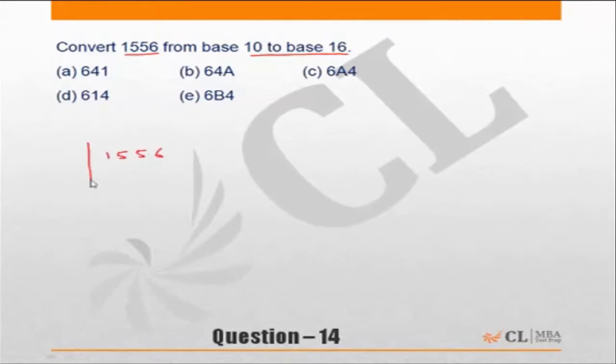Conventionally, you'll do it this way: 1556 divided by 16. 16 into 9 is 144, remainder 11. 16 into 7 is 112, remainder 4. 16 into 6 is 96, remainder 1. So your answer will be 614, which is choice D.